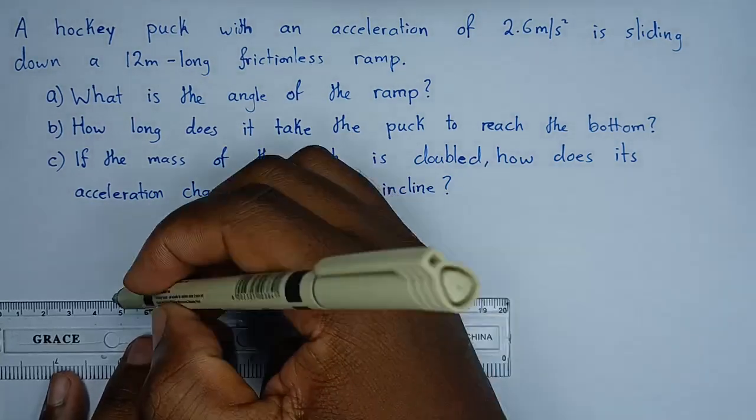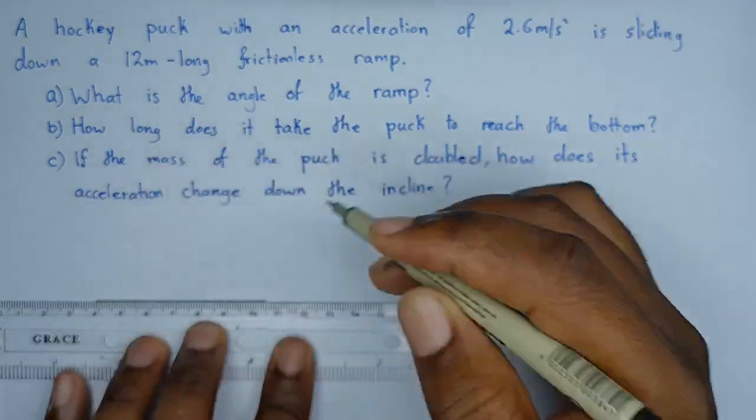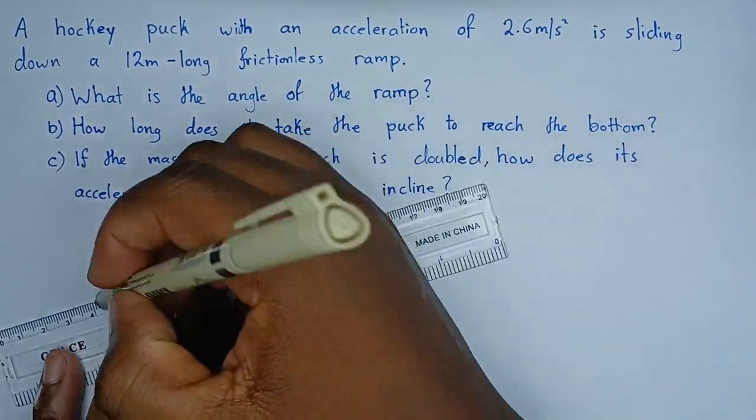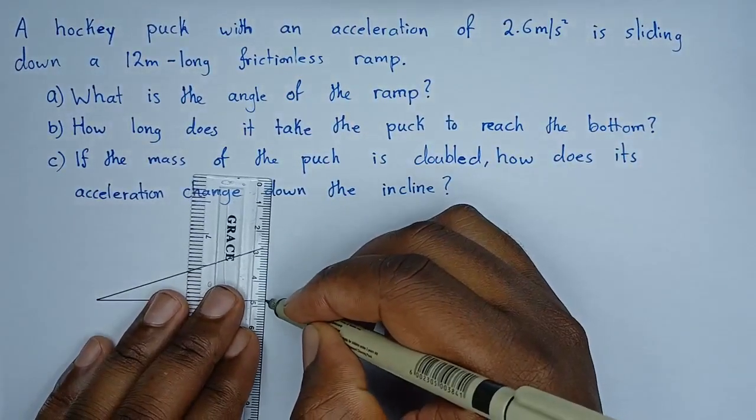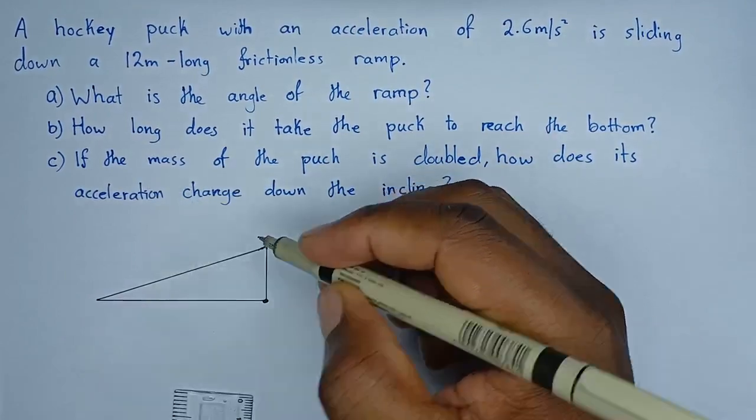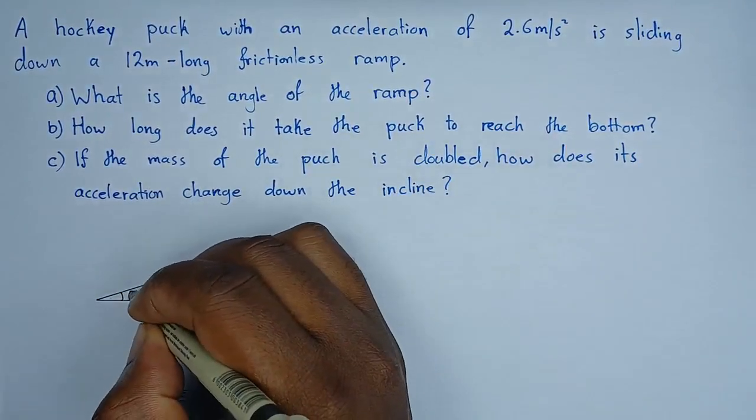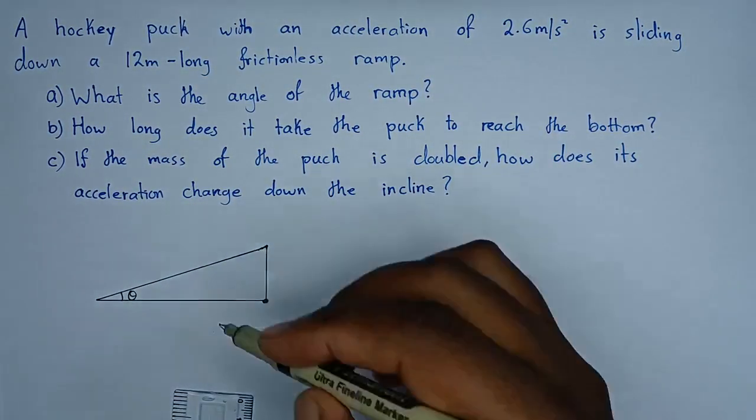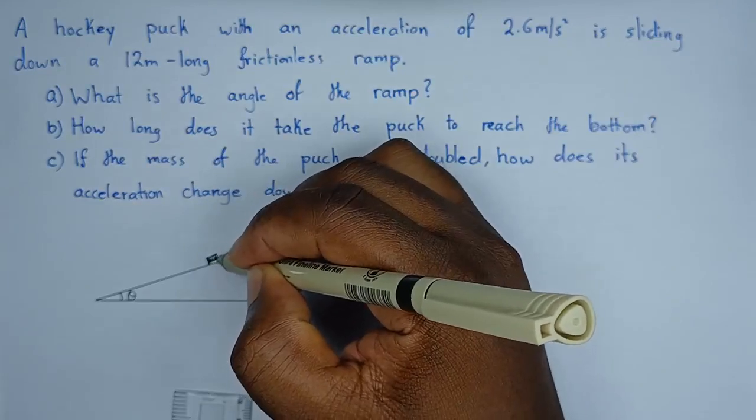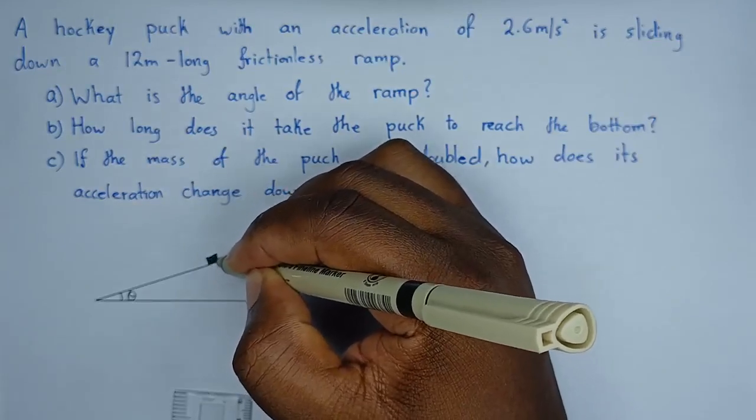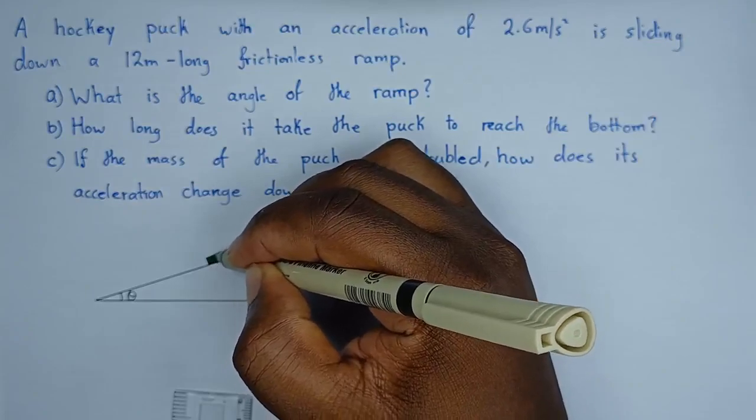So let's roughly draw a diagram to show what is happening. So I'll determine this is our rough ramp, like this. Then we have an angle theta, this theta we're looking for. So then we have this puck here, which is sliding downwards.